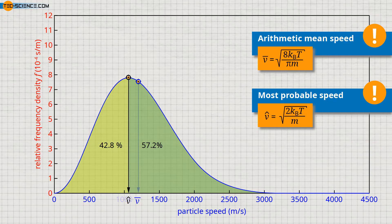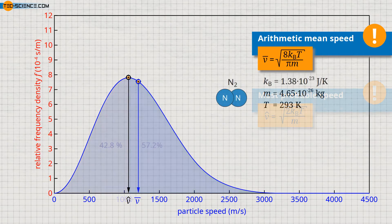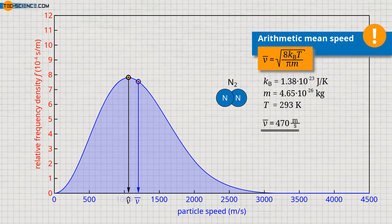To get an idea of the order of magnitude of the mean speed in gases, nitrogen molecules are considered, which make up the majority of the air with 78%. With a particle mass of 4.65 × 10⁻²⁶ kilograms, the nitrogen molecules have a mean speed of about 470 meters per second at 293 Kelvin — greater than the speed of sound. In contrast to sound, a nitrogen molecule does not travel several meters in one direction; it permanently collides with other air particles and constantly changes direction. Such a distance without a collision is usually only a few nanometers and is called the mean free path.